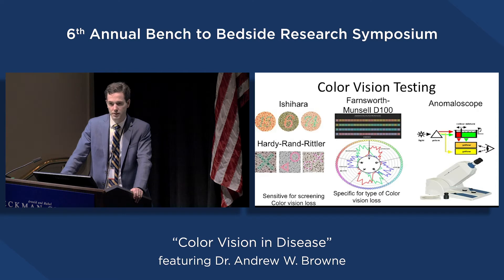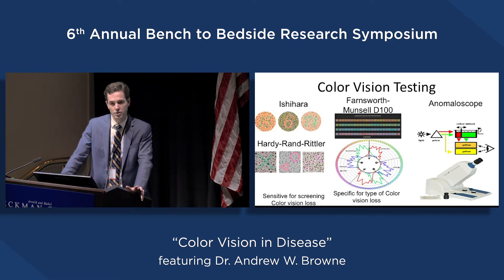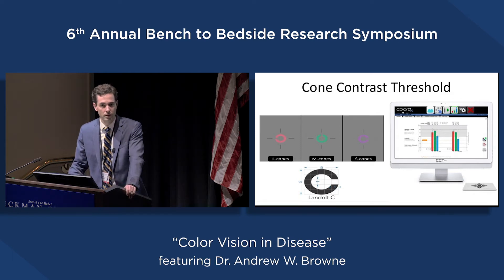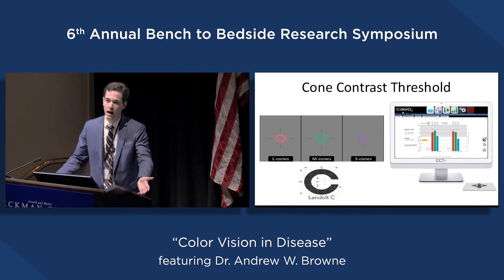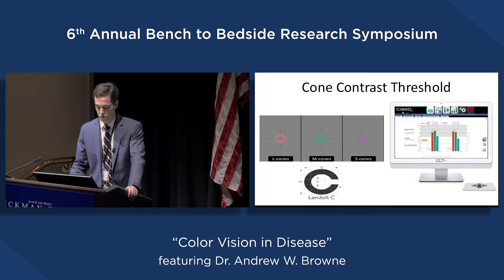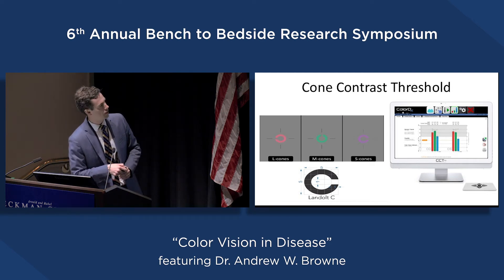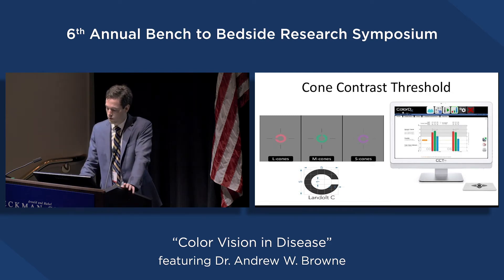The anomaloscope is a test where you compare the combination of green and red to a reference yellow to determine how much error there is — but again, this is another 20 to 30 minute test not practical in the clinical context. Dr. Jameson has already shown us how the cone contrast threshold works. It's very useful because it's a highly calibrated computer screen that can control exactly how bright different letter C's are presented to a patient, and provides individual sensitivities of the red, green, and blue cone classes in each eye.